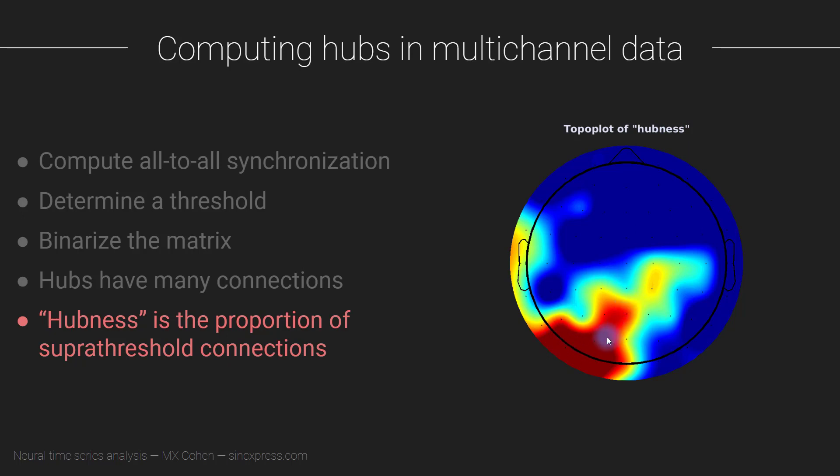So that's how we compute hubness. This is for one time window and one frequency - you can repeat this analysis for different time windows and frequencies. As I've mentioned with several other previous connectivity analyses, this stuff can get pretty thick because you have so many possibilities for different measures, time and frequency windows, different electrodes. When doing this kind of analysis, it's important to allow yourself to be constrained by theory, by your predictions, and by the design of the experiment.